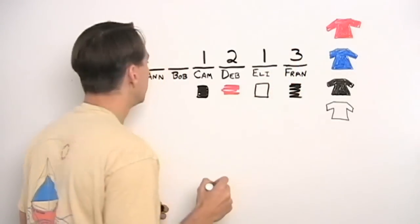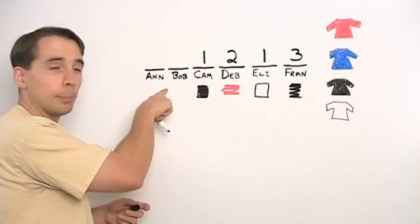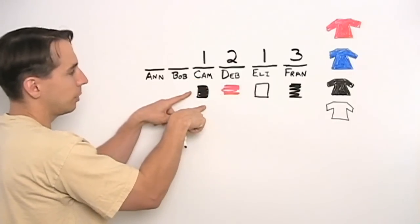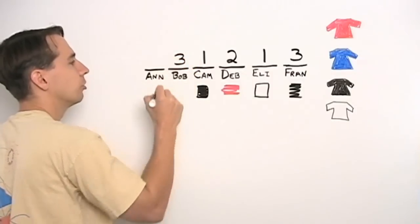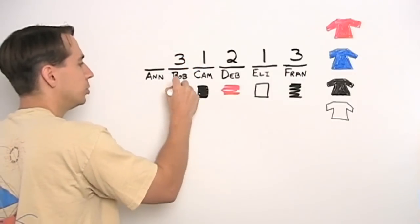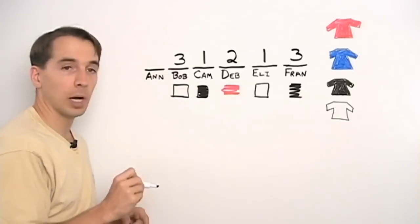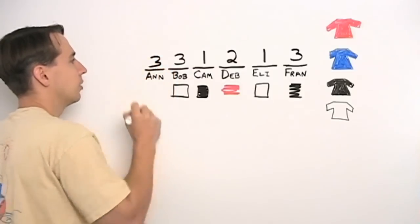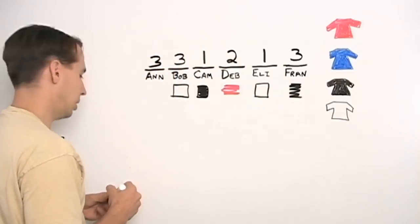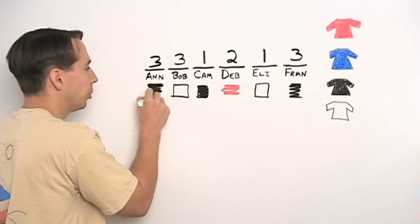And then we have Bob. Bob is only restricted by Cam now. Bob has three choices. And let's say Bob chooses white. And now Ann can choose anything except for whatever Bob chose. Ann has three choices. And we'll let her choose black since I don't want to pick up another pen.